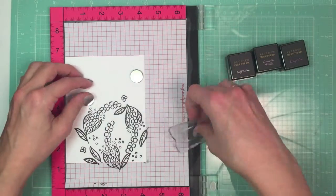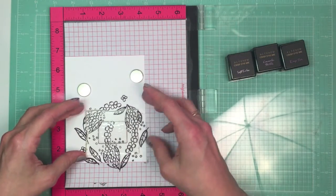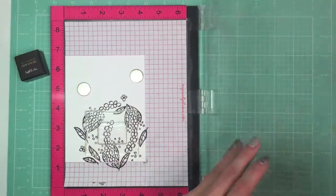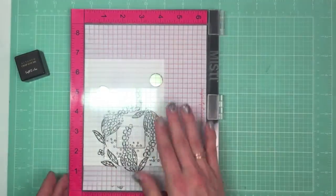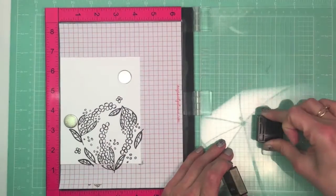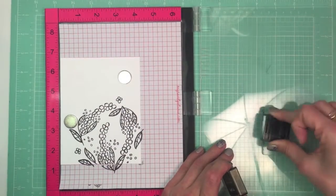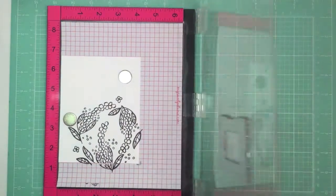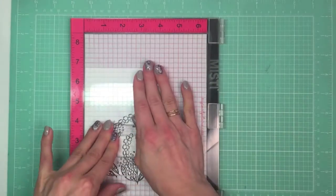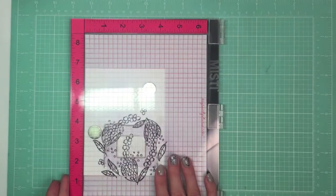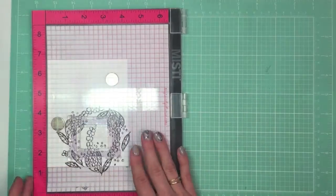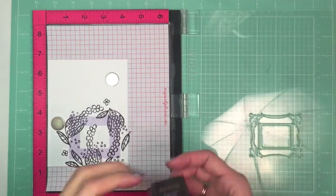That would be a frame from the Ornate Frame stamp set, and that's a stamp layering set. That means you have three stamps for each image to achieve a more in-depth dimensional look for your final project. So that's what I'm going to do. I'm going to take each of the images and stamp it with different shades of lilac colors from lighter to darker.